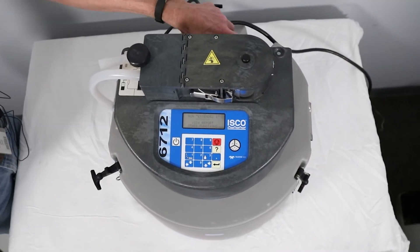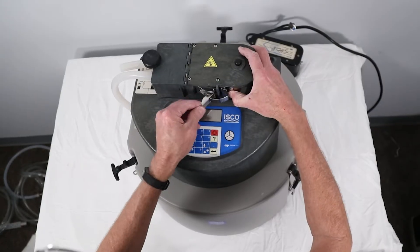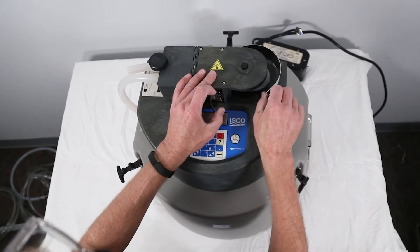Remove the power from the 6712. Open the pump band latch and rotate the band out of the way.